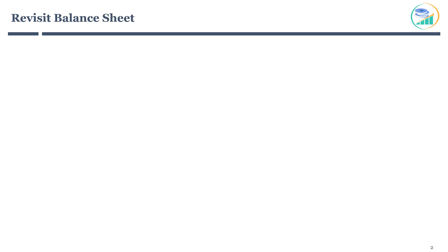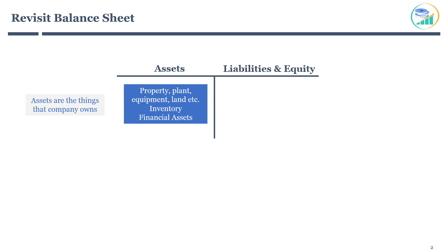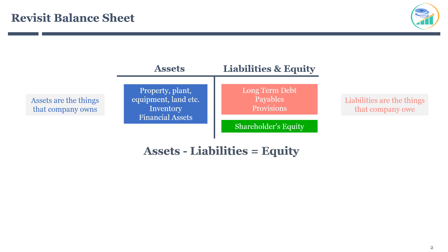Return on equity measures the efficiency of a company to generate profit for its shareholders. Before you understand how it is calculated, let's take a step back and revisit the balance sheet. A company has assets — things that the company owns. On the other side, a company has liabilities — things that the company owes. The third important component is shareholders' equity. Assets minus liabilities gives you shareholders' equity. The balance sheet is made up of these three main components.